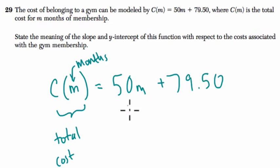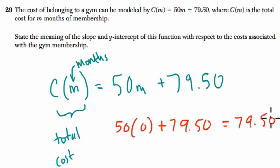Well, here, if we plug in, let's say, 0 for months, so 50 times 0 plus 79.50. Notice the total cost, this is still the total cost, still equals 79.50. So what does that mean? What is 79.50? What is the intercept? That's this value here, the B value, that's the intercept.